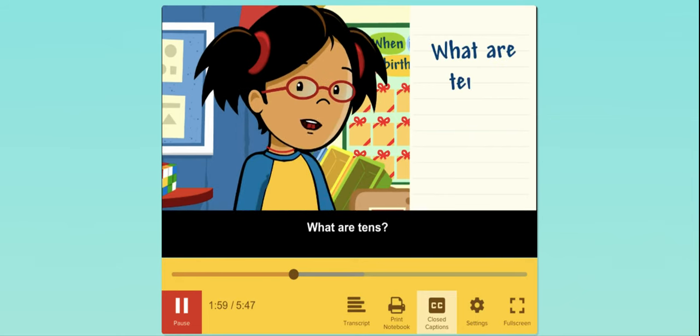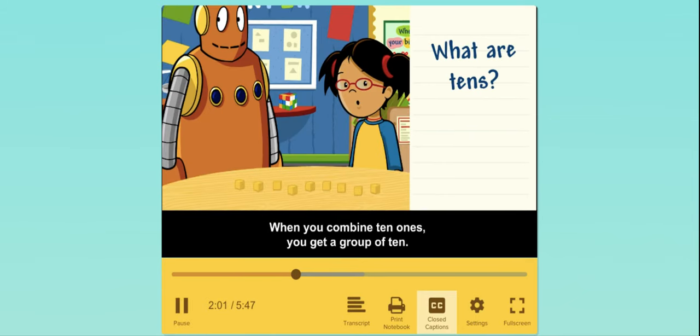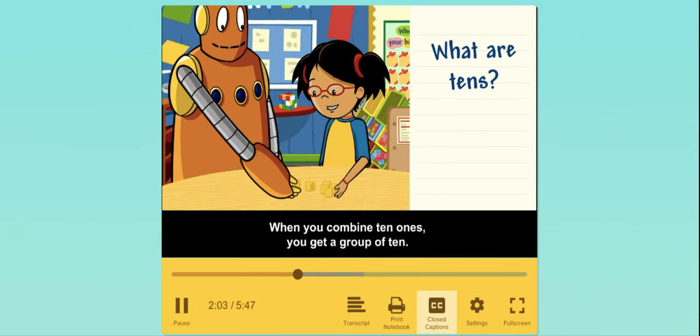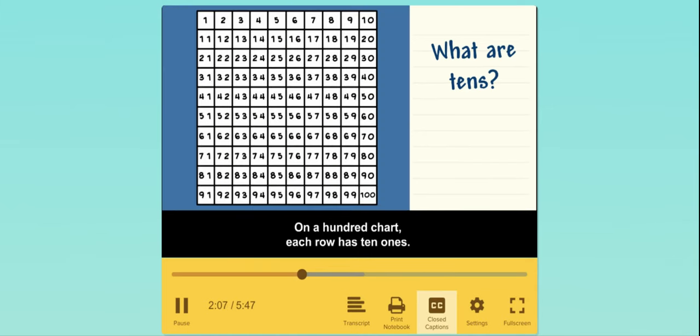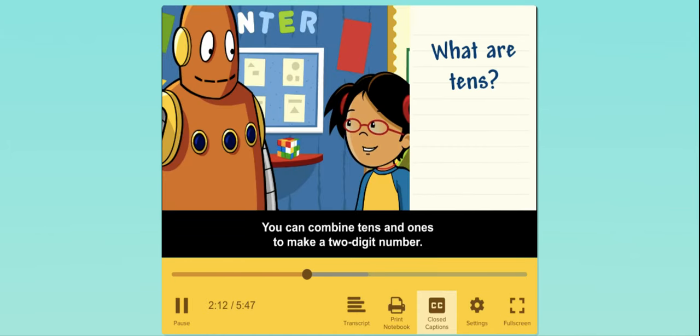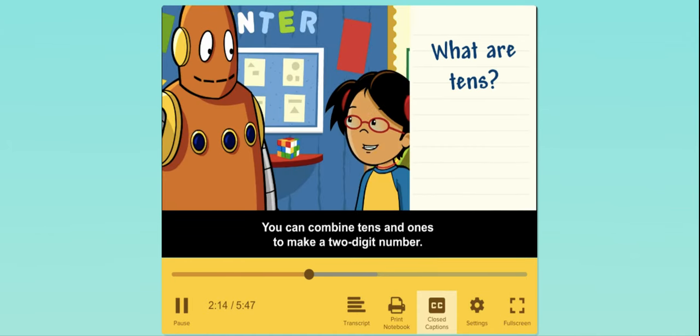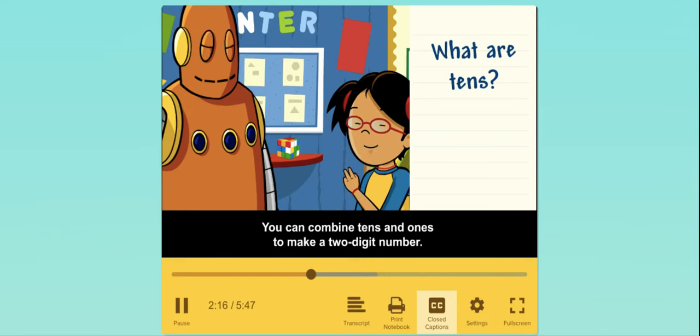What are tens? When you combine ten ones, you get a group of ten. On a hundred chart, each row has ten ones. You can combine tens and ones to make a two-digit number.